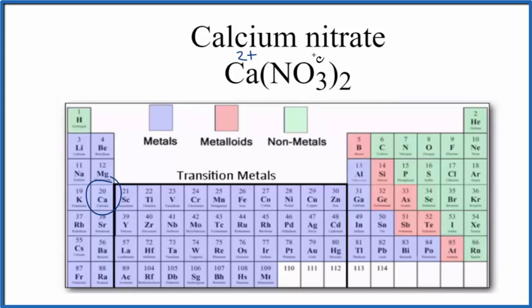So we have a 1-, we usually just write minus. And since we have two of these, we have two nitrate ions, we have a total negative charge of 2-, and that balances out the 2+. We have a net charge of zero.